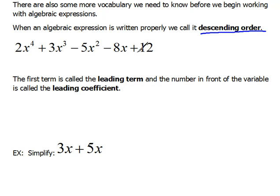When it's written properly the first term is called the leading term. So the leading term in our example here would be 2x to the fourth and the number in front of that variable is called the leading coefficient. So for our example the leading coefficient would be 2.